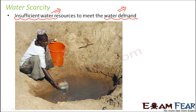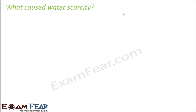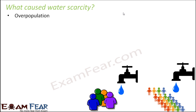Let us look at the causes of water scarcity in more detail. One important cause is overpopulation. It is not only human beings who need water - all organisms, from plants to animals to insects, need water. But human beings play a major role and are largely responsible for water scarcity. The population of human beings is increasing very fast.